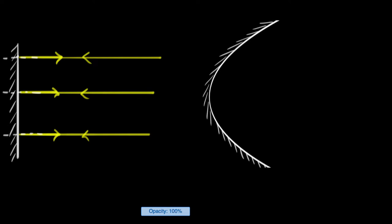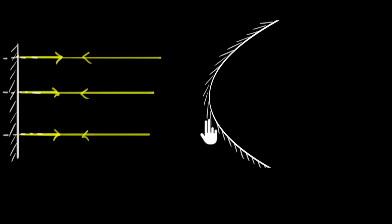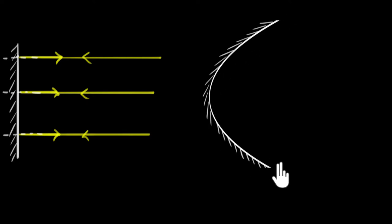A concave mirror is a curved mirror, and if you look at it carefully, you see it's the inner part that is reflecting. Since this inner part is sort of like a cave, we call it a concave mirror. You can think of a spoon — the inner part that you put stuff into is the concave part of it.